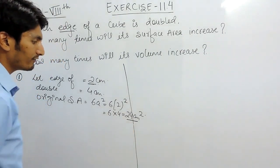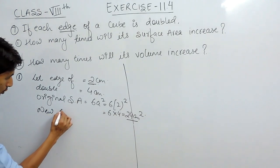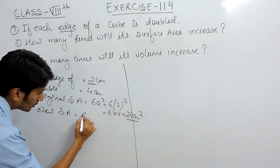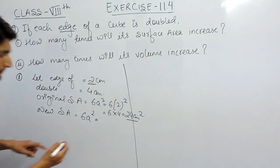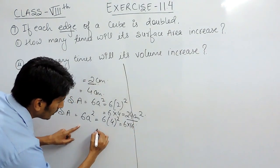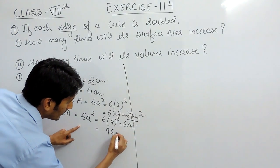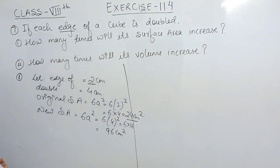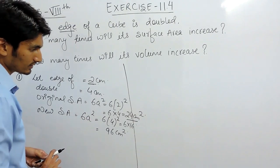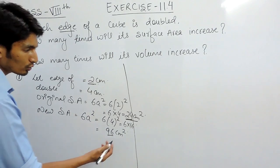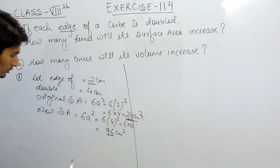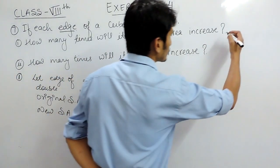Now let's find the new surface area. The new edge is 4 centimeters, so using the same formula: 6 × (4)² = 6 × 16 = 96 centimeter square. Clearly the new area has increased 4 times — initially it was 24 and now it is 96. So the surface area will increase 4 times.